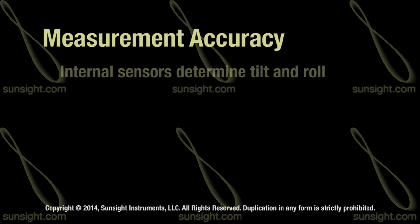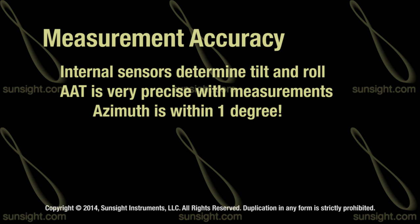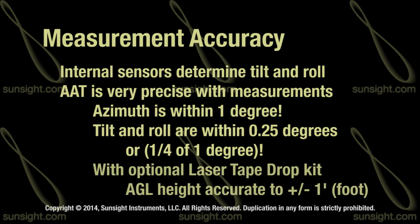Internal sensors are used to determine the tilt and roll of the antenna, much like those used in modern smart levels to determine tilt and roll angles. In terms of accuracy, the AAT records very precise measurements with each capture. For the azimuth, the solution is accurate to within one degree. For the tilt and roll, it is accurate to within 0.25 degrees, or a quarter of one degree. When using the optional laser tape drop kit, the AGL height is accurate to plus or minus one foot.